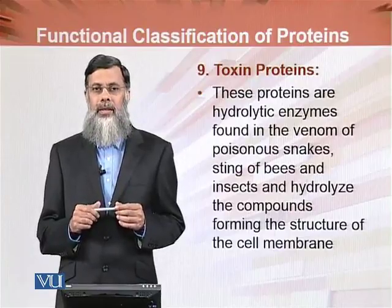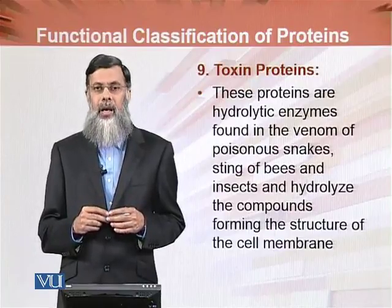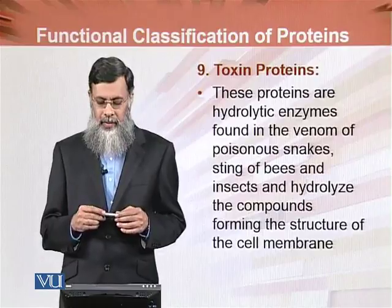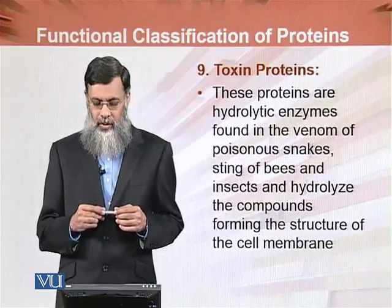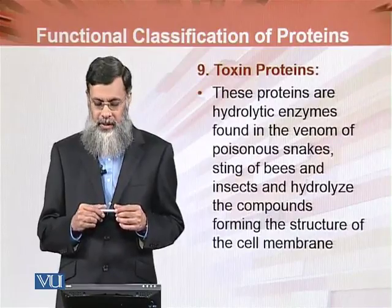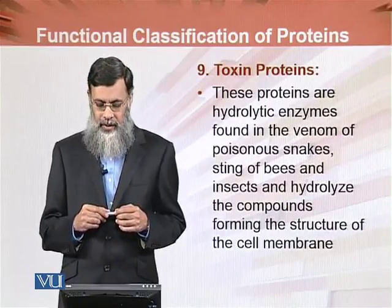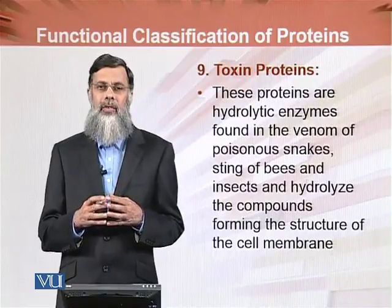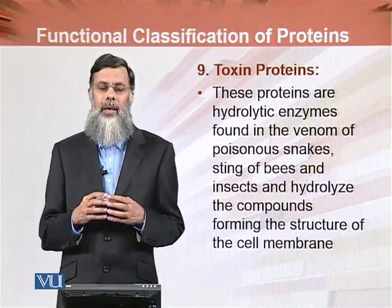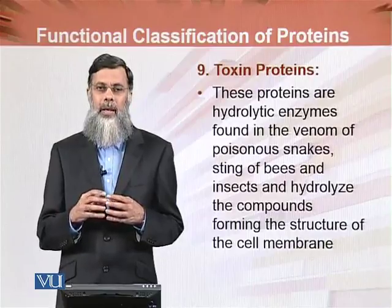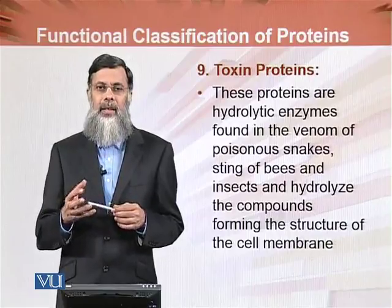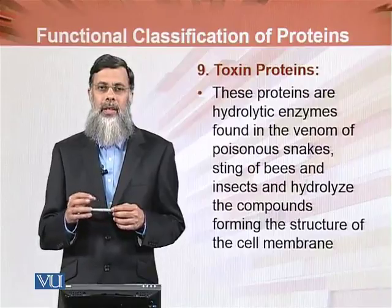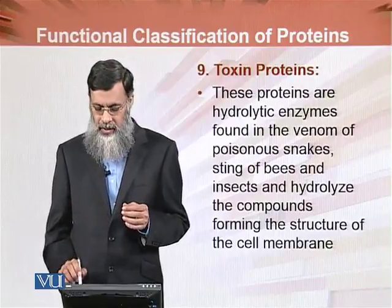The ninth class is the toxin proteins. These proteins are hydrolytic enzymes found in the venom of poisonous snakes, stings of bees and insects. They hydrolyze compounds forming the structure of the cell membrane. The cell membrane has a bilipid layer with proteins embedded in it. These toxin proteins hydrolyze it and cause the destruction of the cell membrane.